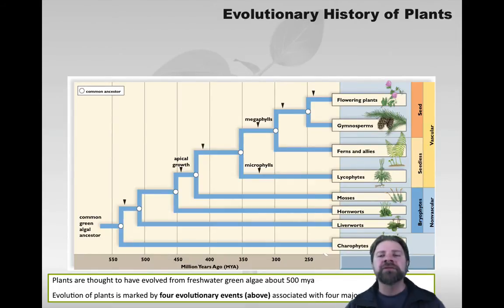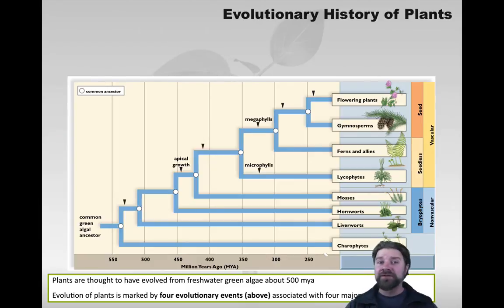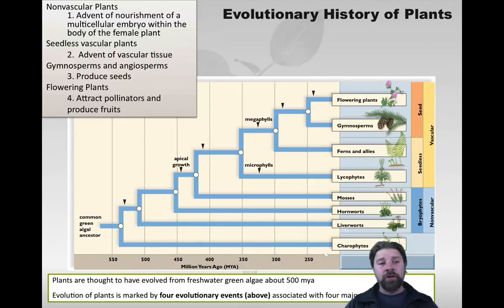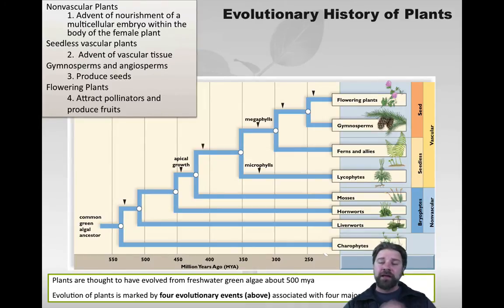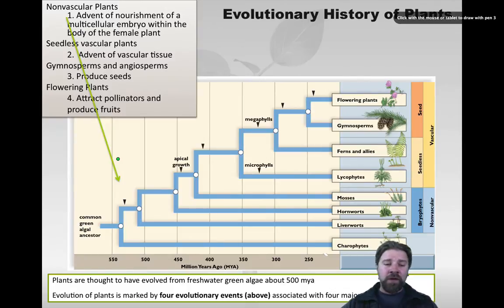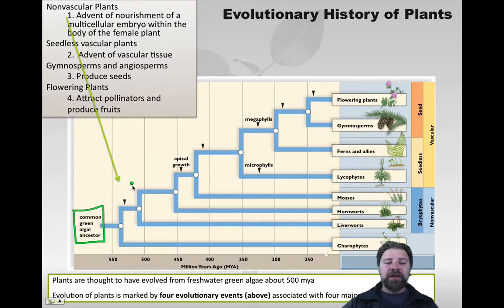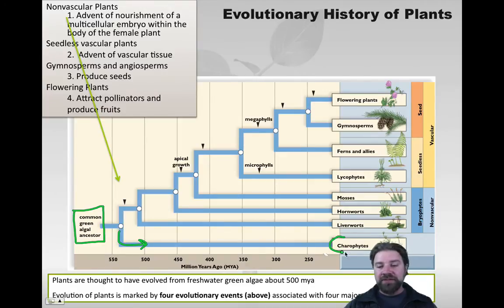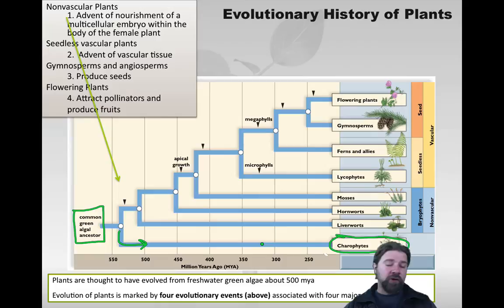If we take a brief look at the evolutionary history of plants, there are four key moments where plants became better suited to their environment. The first big trait that evolved was the nourishment of the multicellular embryo within the body of a female plant. Before this time, plants came from a common green algal ancestor. The ability to nourish the embryo within the female differentiated it from a line of plants called the charophytes, which didn't offer that same protection for the growing embryo.